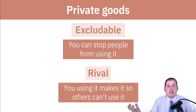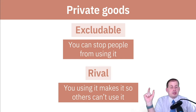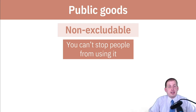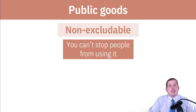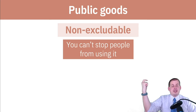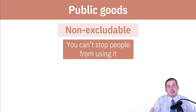A public good breaks both of those requirements. A public good is non-excludable, meaning you can't stop people from using it — if it exists in the world, people can use it. The classic textbook example is fireworks: if there are fireworks in the sky that you paid to light off, there's no way to stop your neighbors from watching. You can't stop people from parking on a hill near a stadium and watching the same fireworks show.